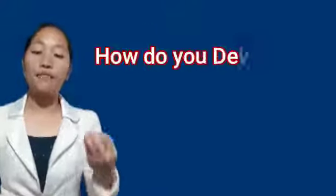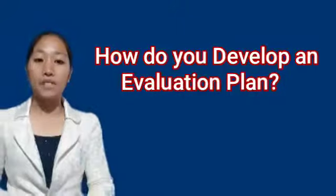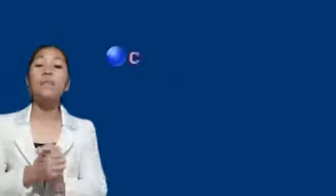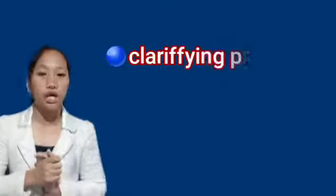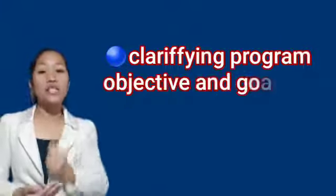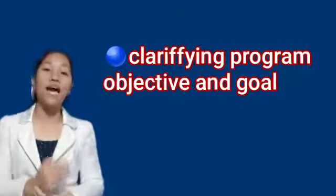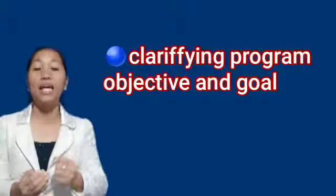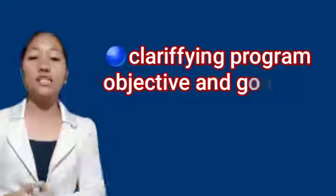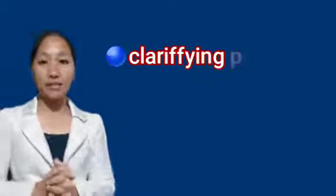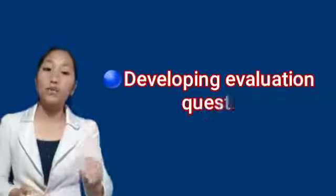How do you develop an evaluation plan? There are steps to follow. First is clarifying program objectives and evaluation: what are the main things you want to accomplish and how have you set out to accomplish them? Clarifying this will help you identify which major program components should be evaluated. One way to do this is to make a table of program components and elements. Another is to develop sample evaluation questions.